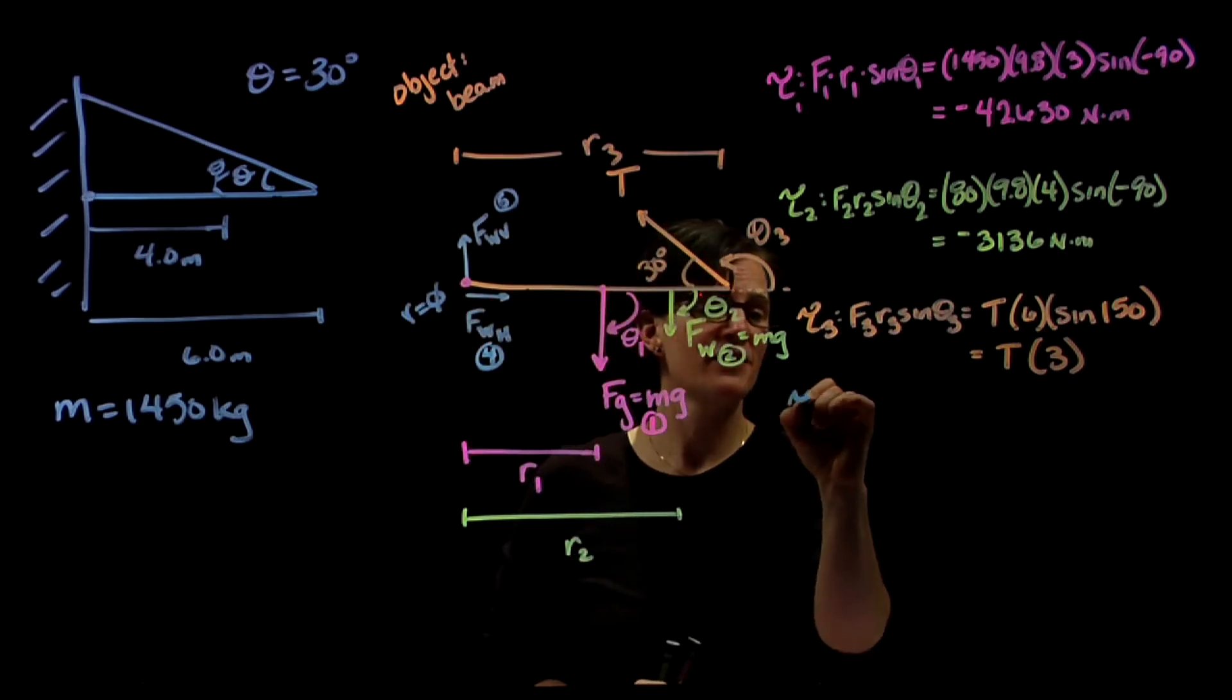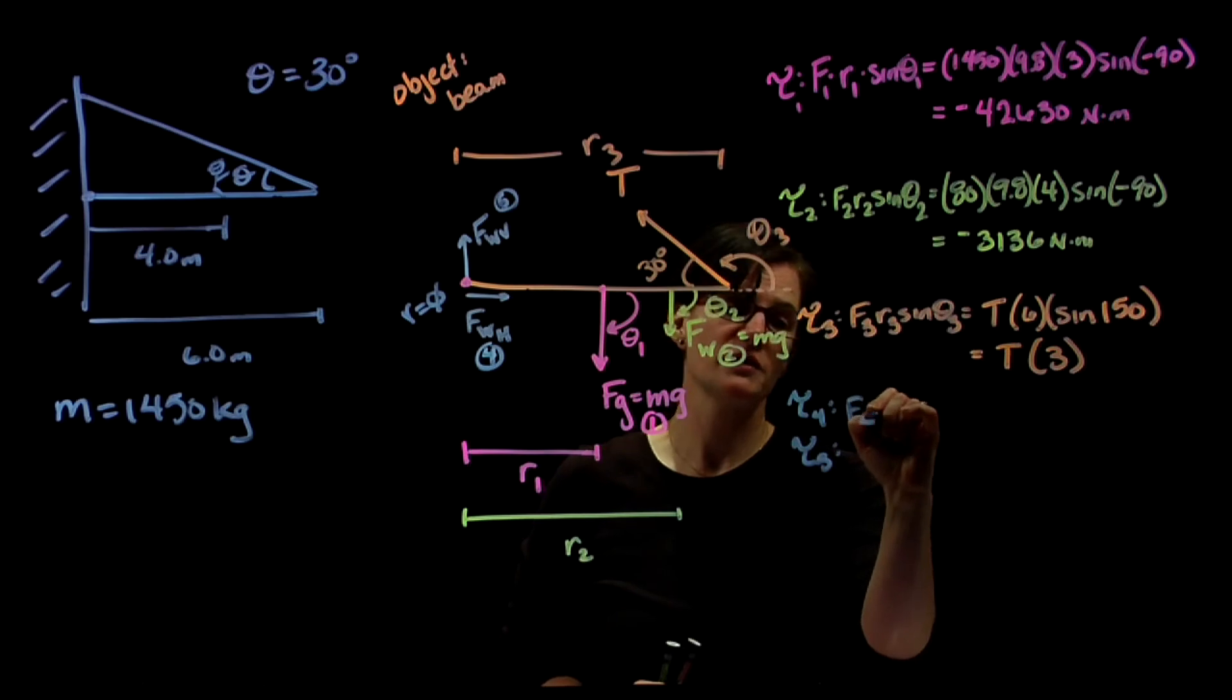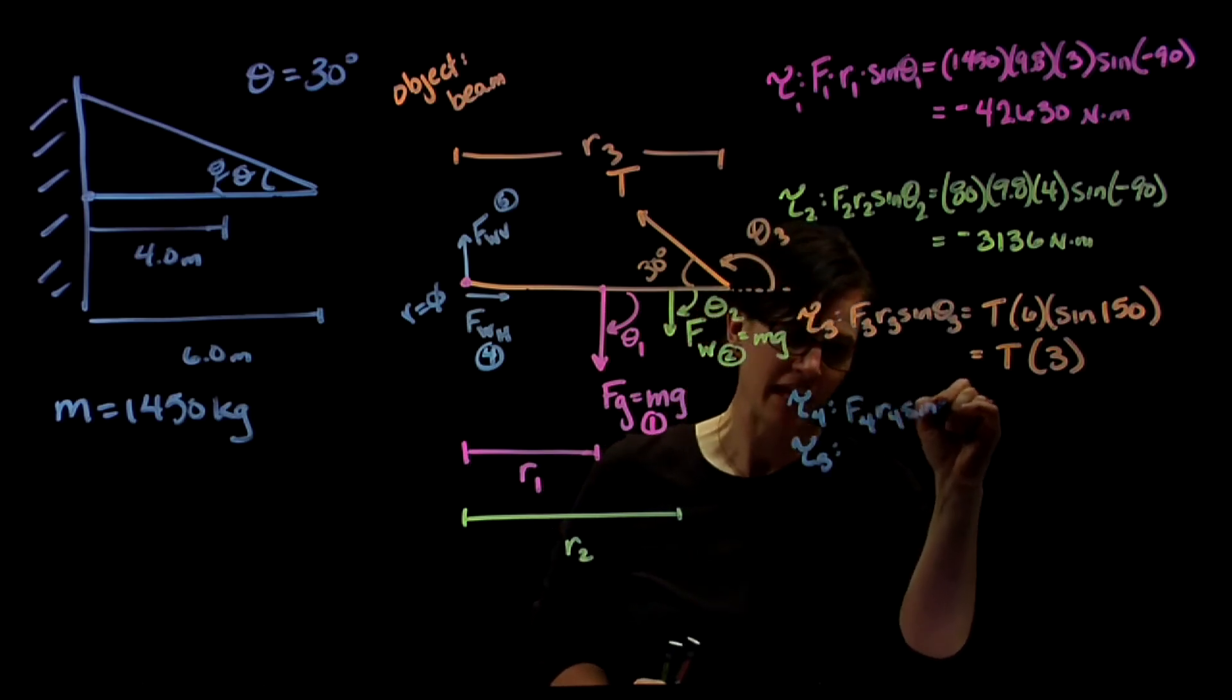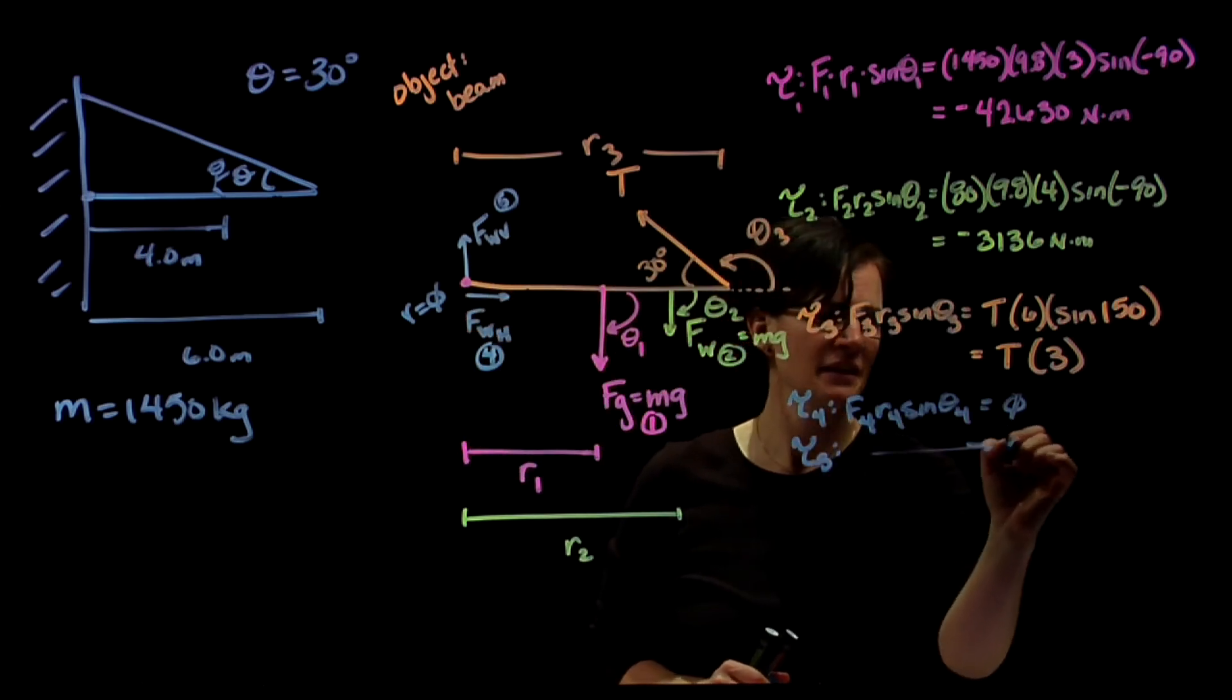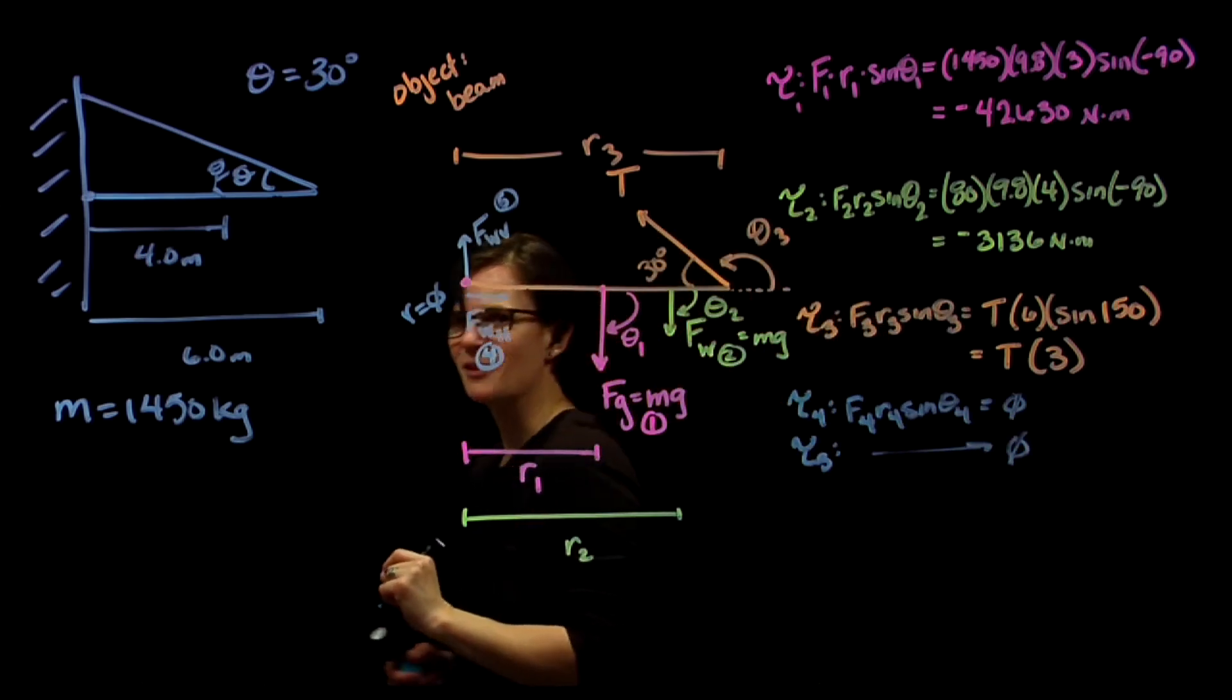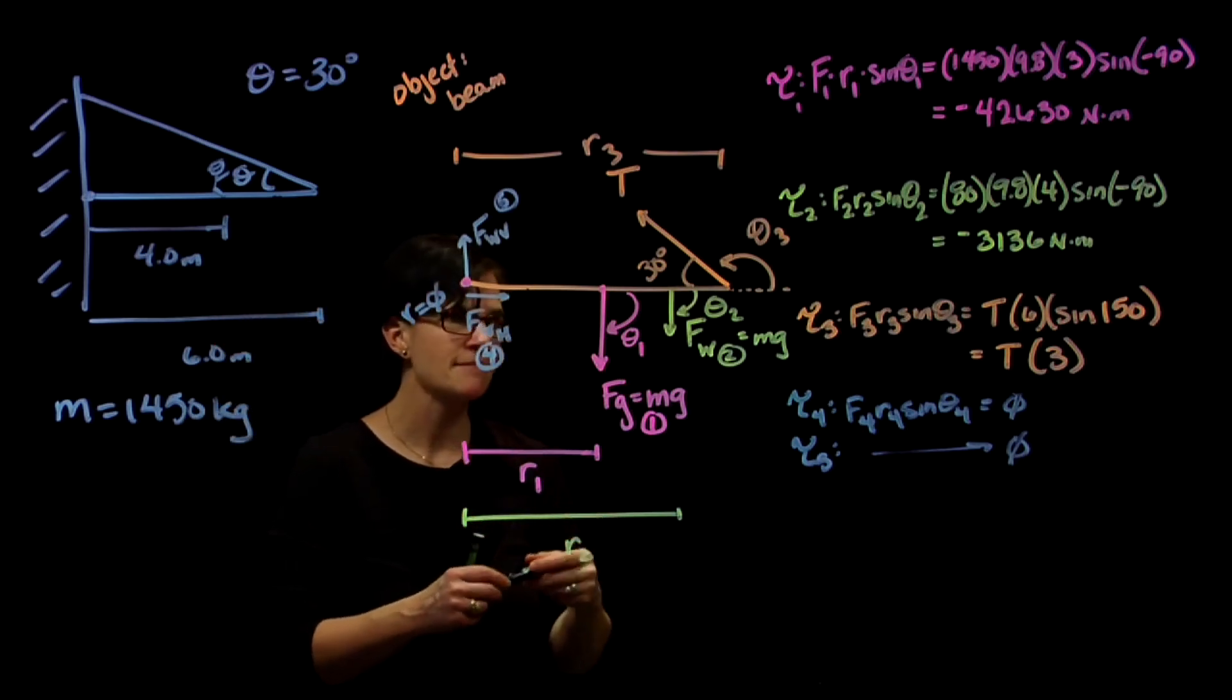Torque four and five, that would be force four, radius four, sine of theta four. We know that to be zero because our radius is zero. And similarly for torque five, our radius is zero, so we have a zero torque being exerted.